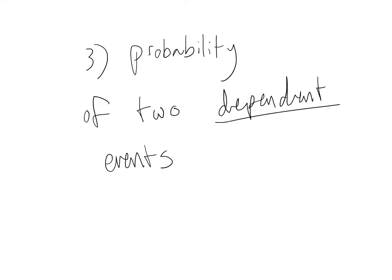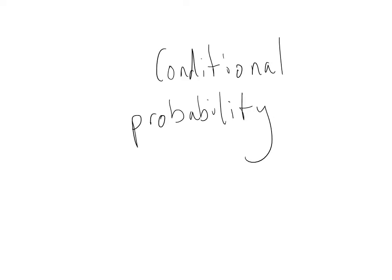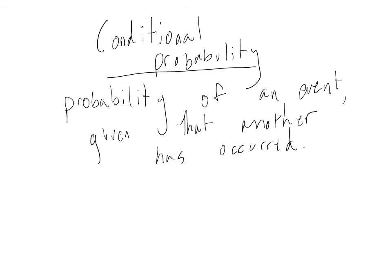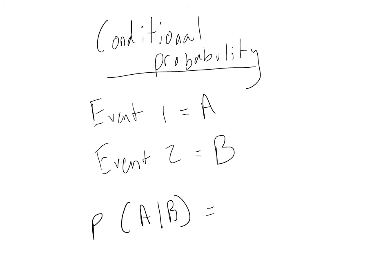Next, I'm going to talk about the probability of two dependent events. In order to understand this, it's important to first talk about what we call conditional probability. Conditional probability occurs when the likelihood of one event happening depends on another event. We say the probability of an event given that another event has occurred. If event one is A and event two is B, the conditional probability of A given B is written using the notation shown here.